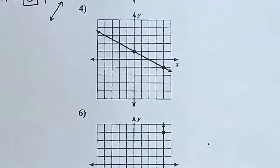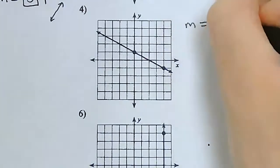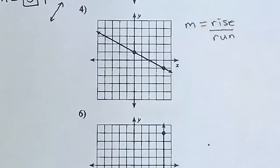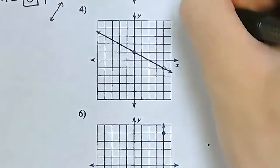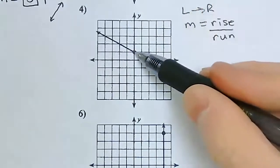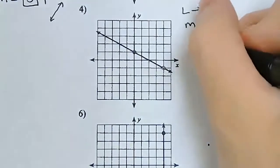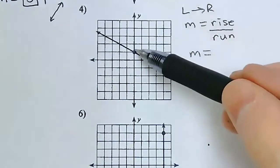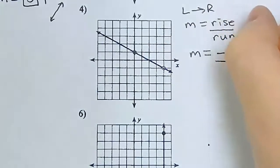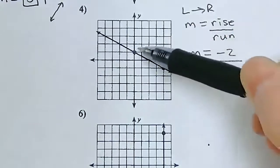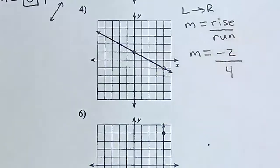For number 4, we're going to do the same thing — use rise over run to figure out the slope of this line. I start with the left point and go all the way to the right point, always going from left to right. For this point, I need to see how far up or down I need to go to reach the next point. In this case, I'm going down and I need to go down twice, so my rise is going to be negative 2. How far to the right do I need to go? I go 1, 2, 3, 4 spaces to the right, so I put a positive 4 in the denominator.